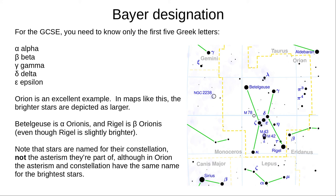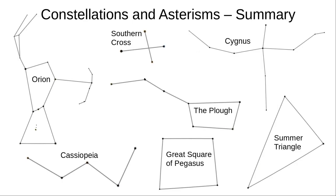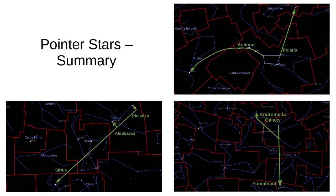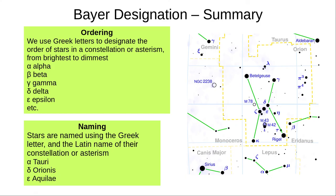Nebulae and galaxies don't follow this method. Here are three pages that summarise asterisms, pointers, and the Bayer designation. In Part 3 of Objects in the Sky, we'll look at the motion of astronomical objects through our sky. Thank you for watching, goodbye, and have an excellent day.